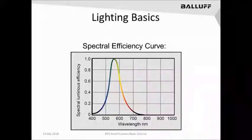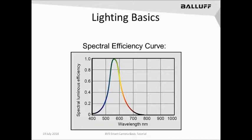Let's start by looking at the spectral efficiency curve. This curve represents the spectral luminescence, or visibility, of a given color along its wavelength. To the left is the ultraviolet light, or dark blue light as it's sometimes referred to, and on the right is the red, or infrared, end of the spectrum.